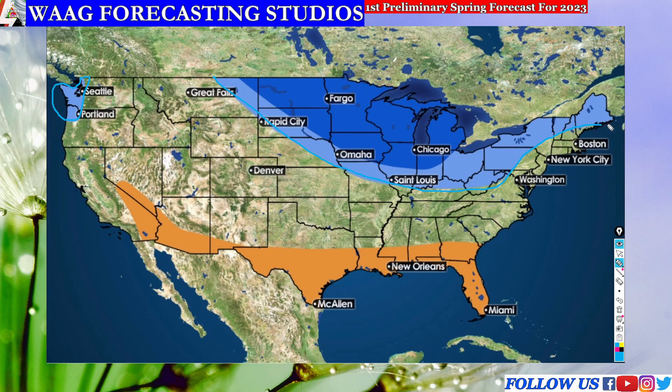This is just slightly below average, nothing too extreme. This includes the cities of St. Louis, Omaha, Rapid City, Seattle, and Portland. Basically, you can expect nothing too extreme below average — just a slightly colder spring.